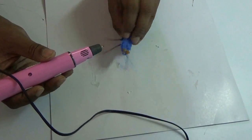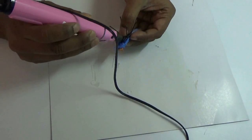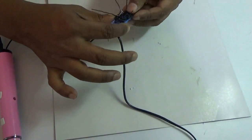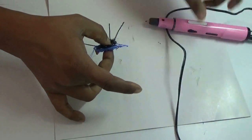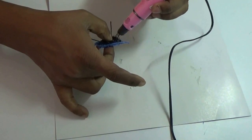Then with the same 3D pen, attach the body with the base. You don't need any glue or anything else. The pen is sufficient.